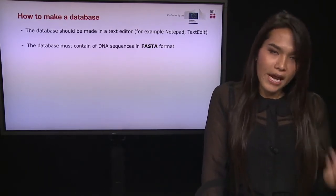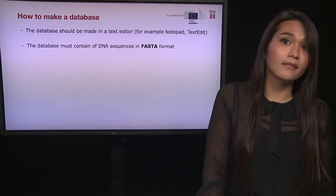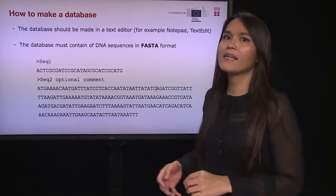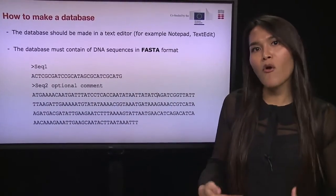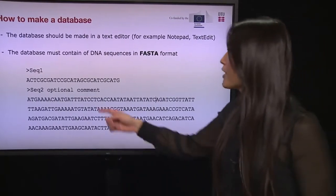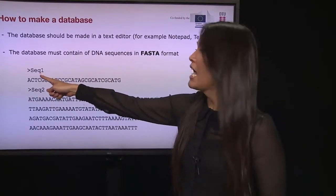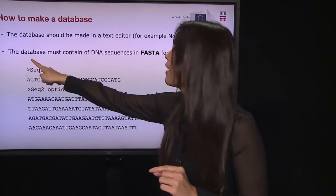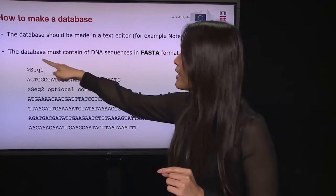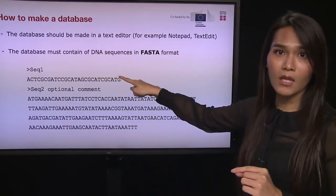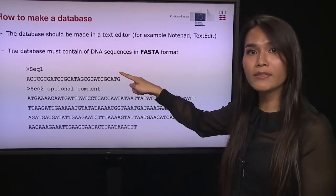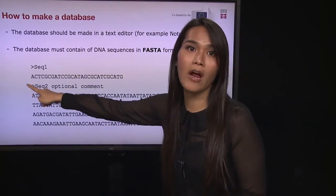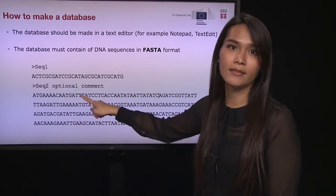The database must contain DNA sequences in FASTA format. The FASTA format is the standard format for storing DNA sequence data. It starts with a header line beginning with the greater-than sign followed by any ID. The next line is the sequence data — ATCG. If you have multiple sequences, you continue with another greater-than sign, ID, and sequence data.